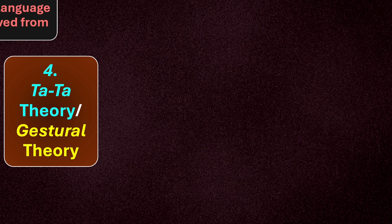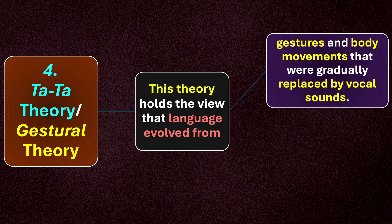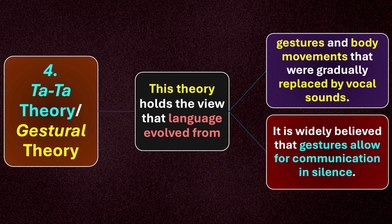Moving on to number four: the ta-ta theory, sometimes called gestural theory. This theory holds the view that language evolved from gestures and body movements that were gradually replaced by vocal sounds. It is widely believed that gestures allow for communication in silence. For example, when you wave goodbye — saying 'ta-ta' or 'bye-bye' — such sounds combined with body movements and gestures must have caused language to evolve.